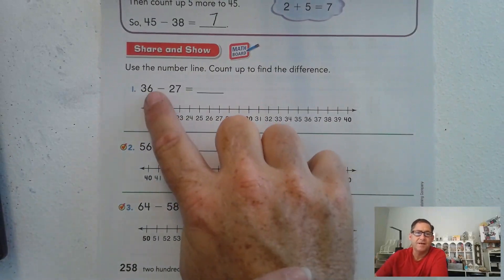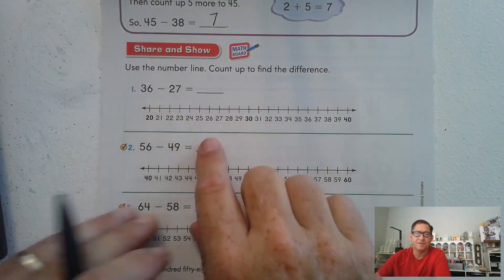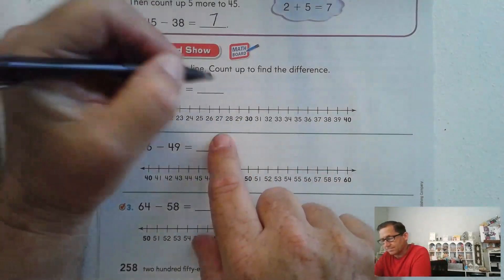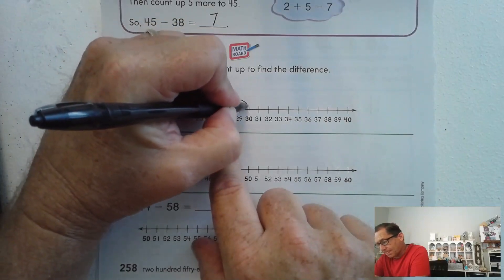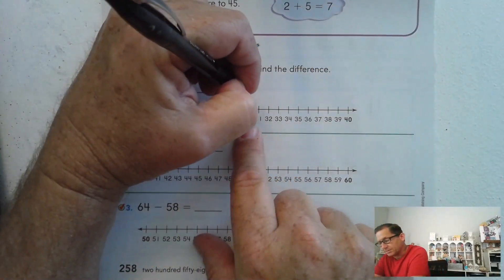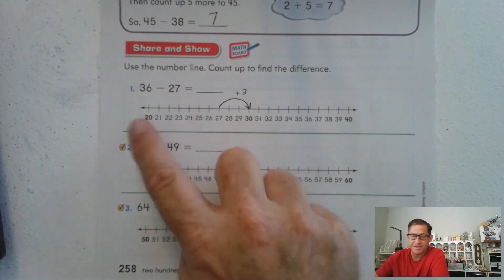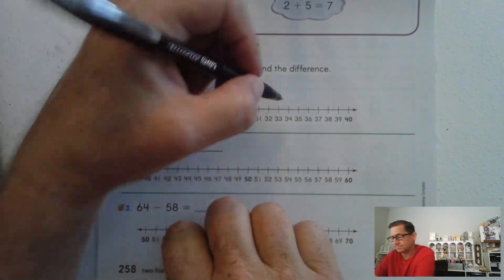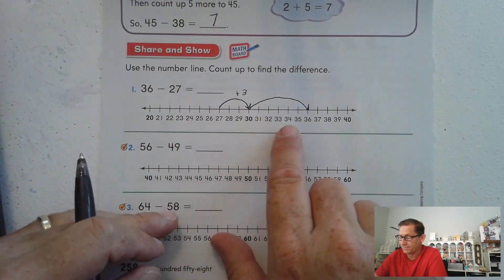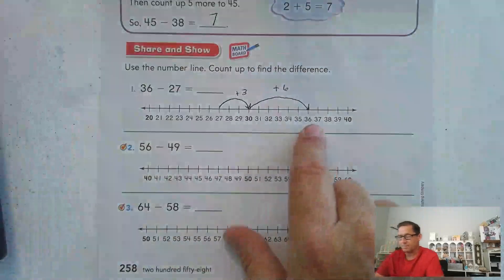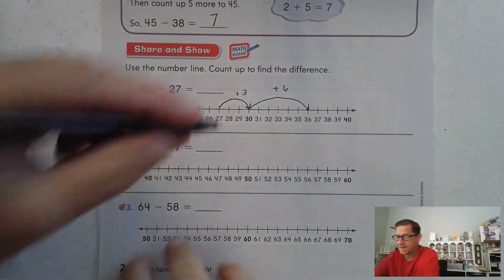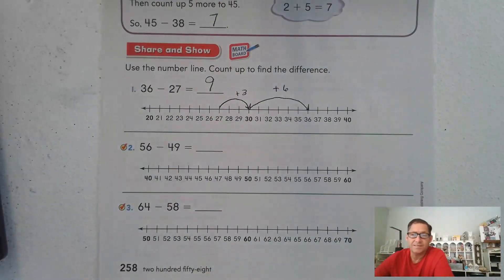Use the number line and count up to find the difference. 36 minus 27. So let's start at 27 and let's go to 30. How much did we jump? We jumped 1, 2, 3. So let's plus 3. And now how do we go from 30 to 36? 6. That's 6. So what is 6 plus 3? 9. So 36 minus 27 is 9.